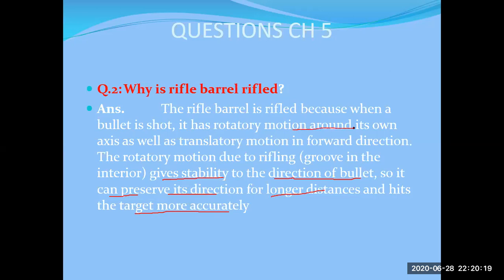The bullet has rotatory motion around its axis as well as translatory motion in the forward direction. These are the two types of benefits of rifling the gun. It gives stability to preserve its direction, so this is the most important benefit of rifling the gun.